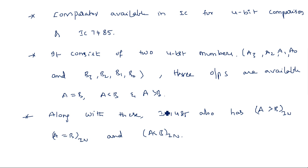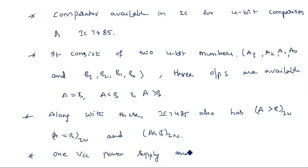Along with these, we also have power supply connections. In order to work with an IC we need a VCC power supply pin and a ground pin. So totally we have 16 pins: 4 inputs for A, 4 inputs for B makes 8, plus 3 outputs makes 11, plus 3 cascade inputs makes 14, and VCC and ground make pins 15 and 16 — total 16 pins.